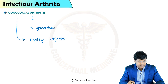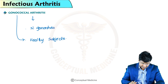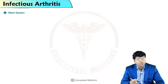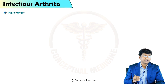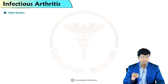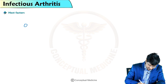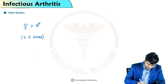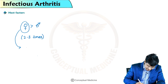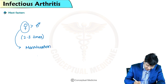In case of gonococcal septic arthritis, it is seen in healthy subjects. Gonococcal arthritis is almost two to three times more common in women than men. In women, it occurs mostly during menstruation and pregnancy.